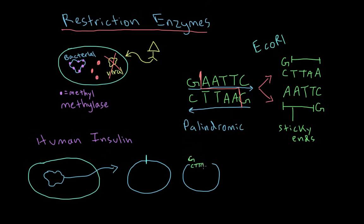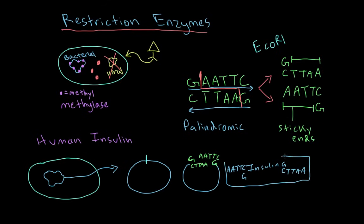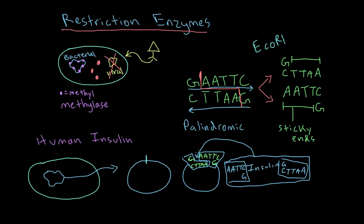On one side we have C-T-T-A-A and G, and on the other side A-A-T-T-C and G — these are the sticky ends. We then take the human insulin gene, which has already been exposed to ECO-R1, so it also has complementary sticky ends: A-A-T-T-C and G on one side, and G and C-T-T-A-A on the other. We can then take the insulin gene and place it right into the gap. One end of the insulin gene re-anneals with one sticky end of the bacterial DNA, and the other end re-anneals with the other side, inserting the insulin gene into the bacterial DNA.